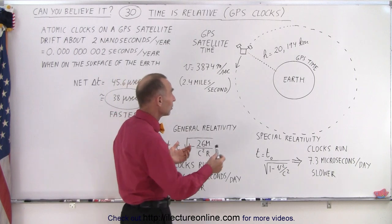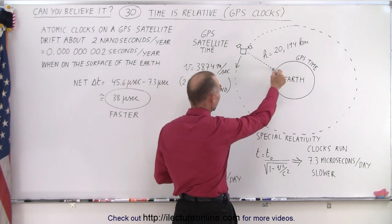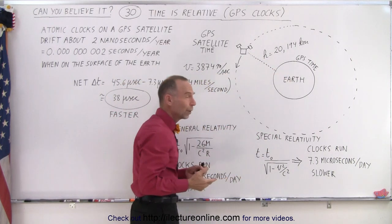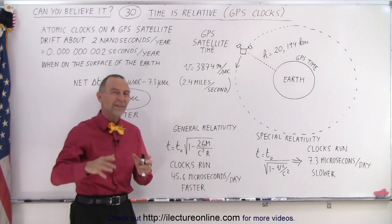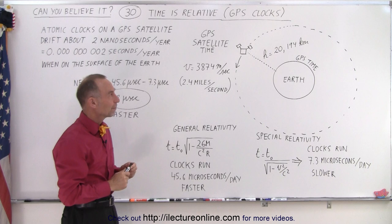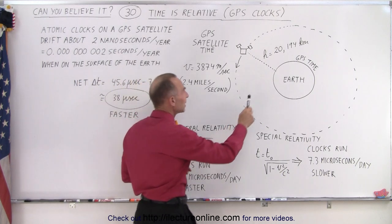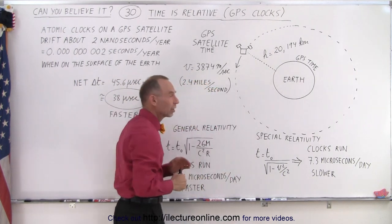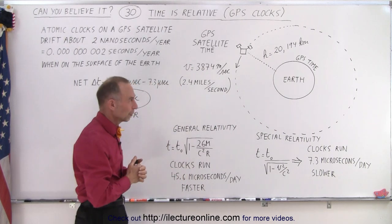Let's say that we look at our GPS satellites. They are at an orbit where they go around the Earth once every approximately 12 hours, just slightly less than 12 hours. And that means that they need to be at a height of about 20,194 kilometers above the surface of the Earth.